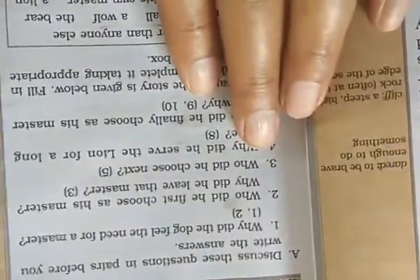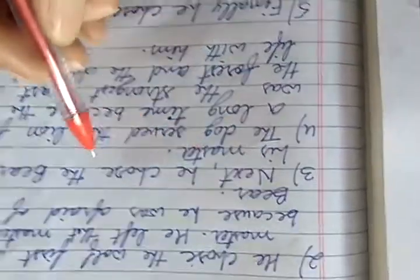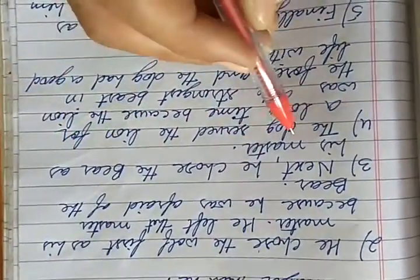Question number 3 is, who did he choose next? Next, he chose the bear as his master.